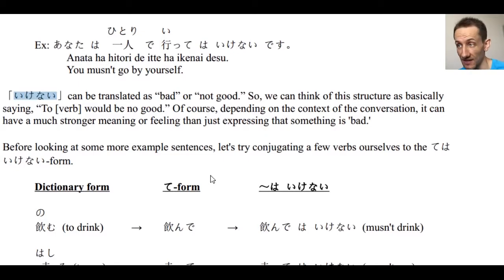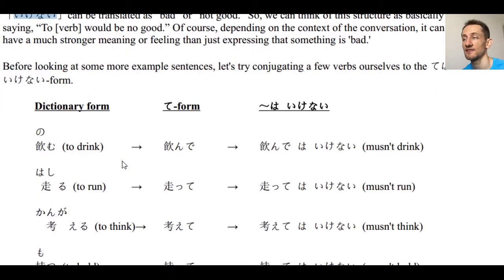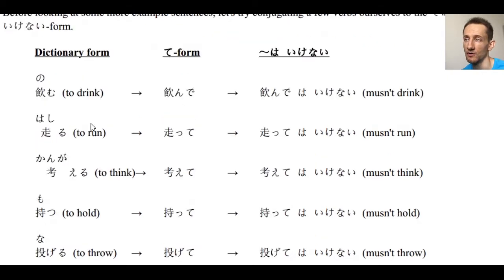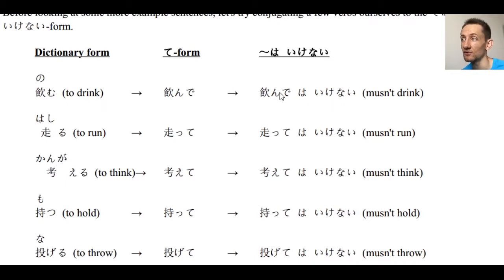We'll look at more example sentences later, but for now let's look at some example conjugations. We're just going to append wa ikenai to the te-form of our verb. Here we have the dictionary form verbs: nomu, and we get nonde — the te-form — and we append wa ikenai to get nonde wa ikenai, meaning must not drink.